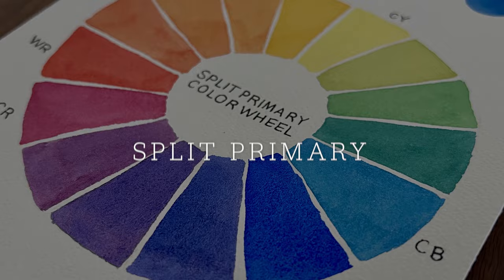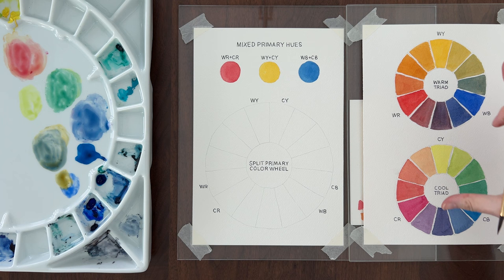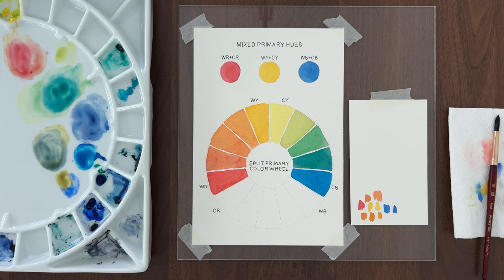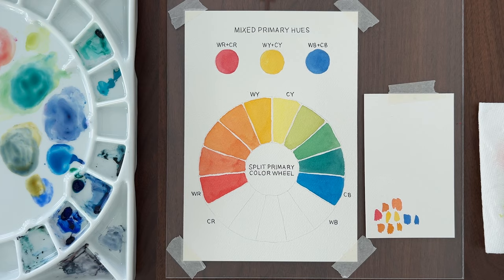To mix the cleanest, most saturated secondary and tertiary colors, we need to merge these two color wheels together. We'll take the best of both, the oranges from the warm triad and the greens from the cool triad and put them on our split primary color wheel. That way we can see the range of clean oranges and greens we can mix. We'll look at purple in a moment.